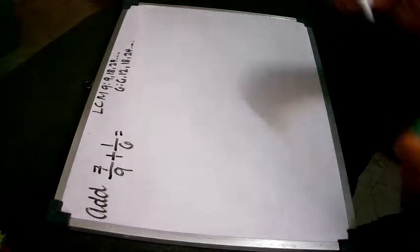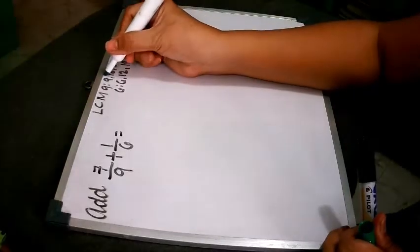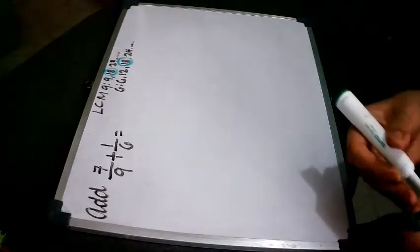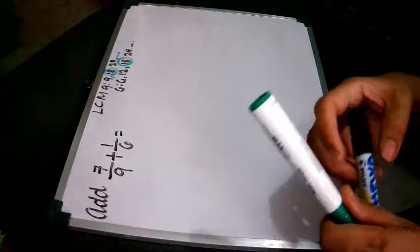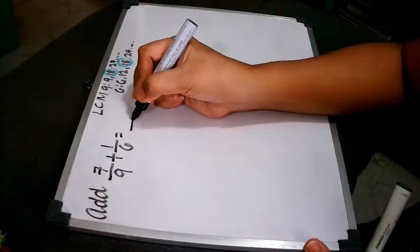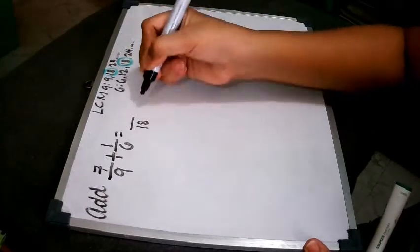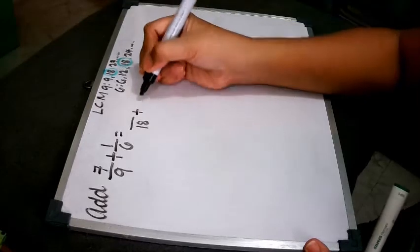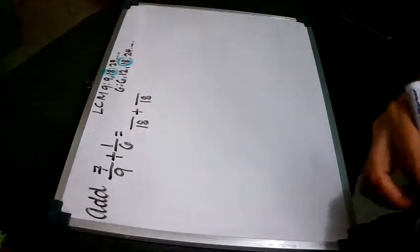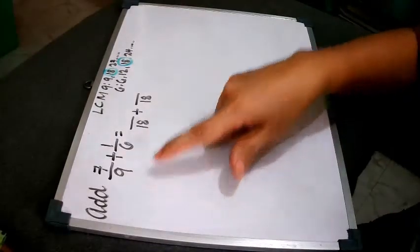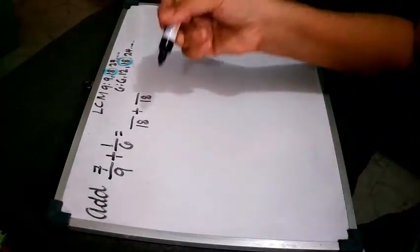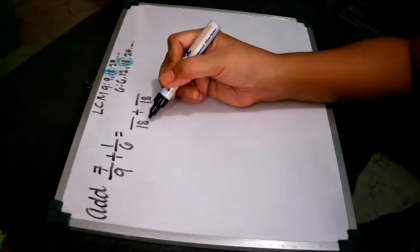So the 18 here will now be our LCD, least common denominator. So we have 18, which is the denominator. We will make a new fraction for this. So this 7/9 will become this one, a new fraction. So 18, listen,